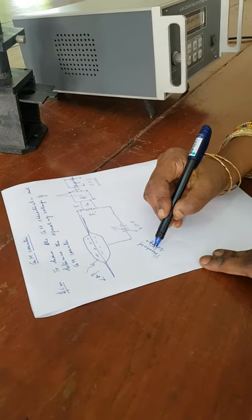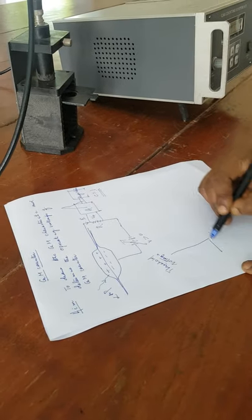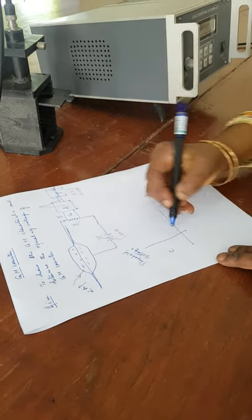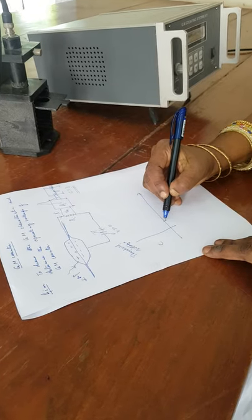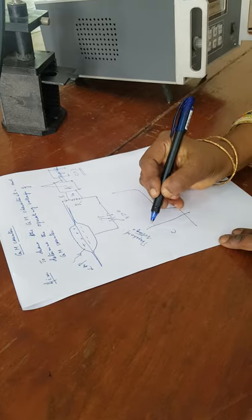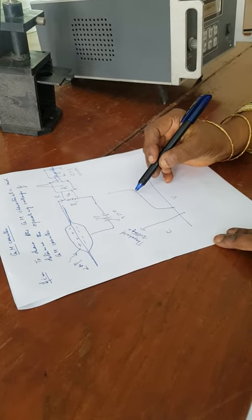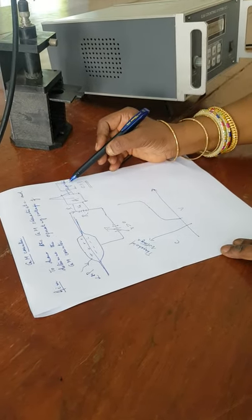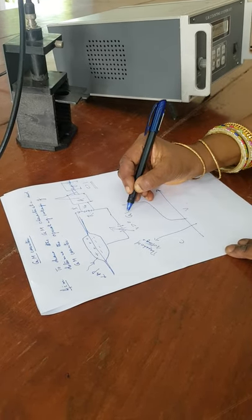The counts are dependent on the voltage applied. When I draw a graph of voltage versus the count obtained, it starts at a particular voltage called the threshold voltage. The graph drawn between the voltage applied to the GM counter and the counts registered is called the GM characteristic.